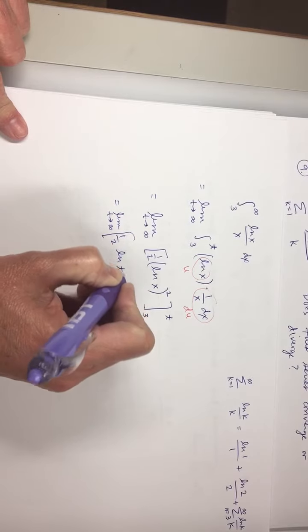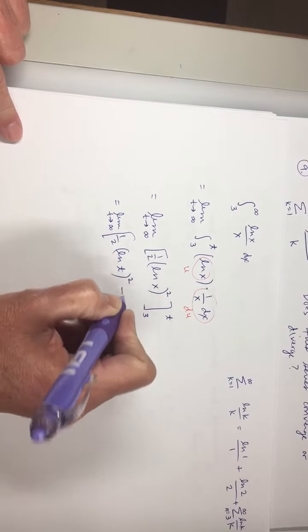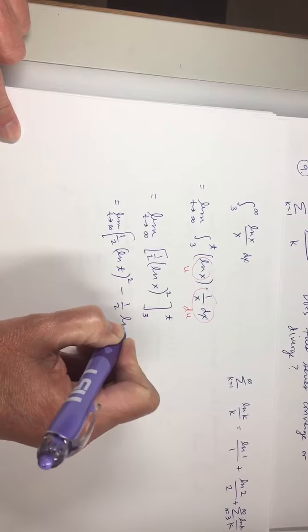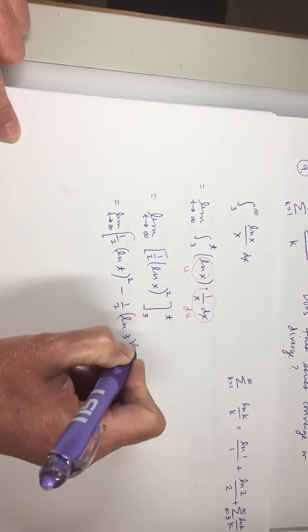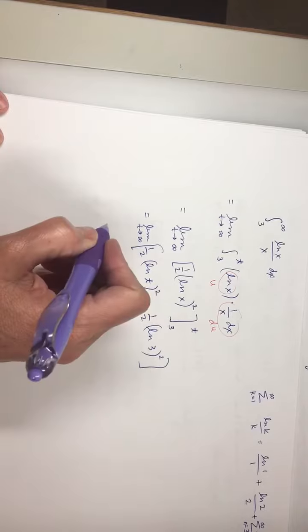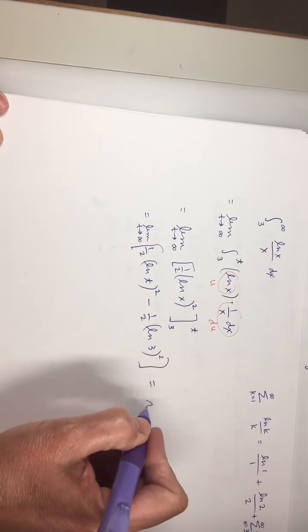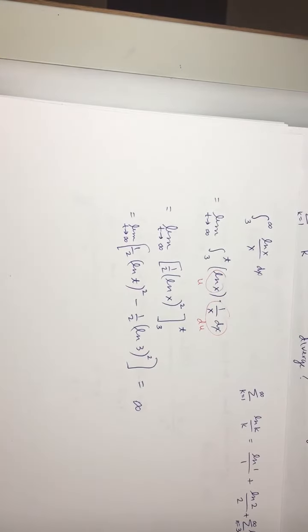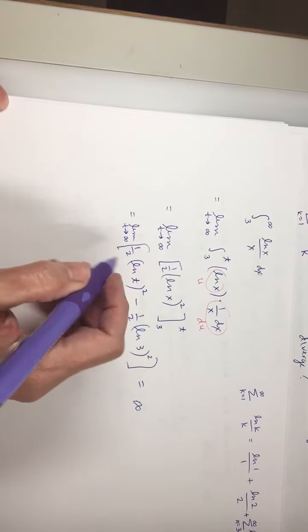So now let's plug in my numbers. So I'm going to have the limit as T approaches infinity of 1 half ln(T) squared minus 1 half of ln(3) squared. What does that limit equal? That is infinity or it does not exist. So the integral diverges.